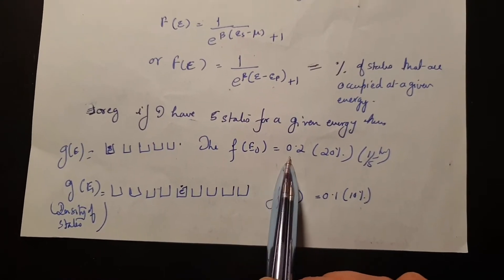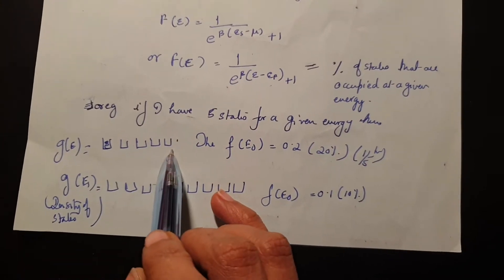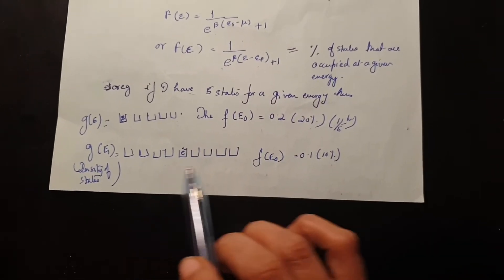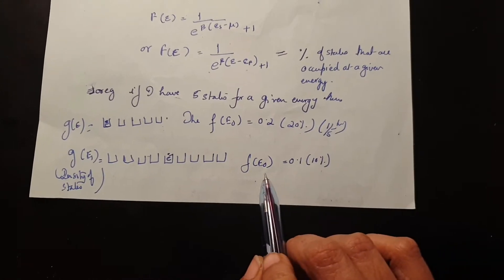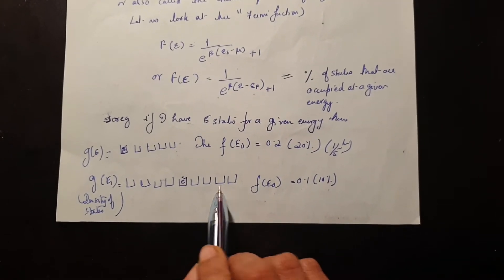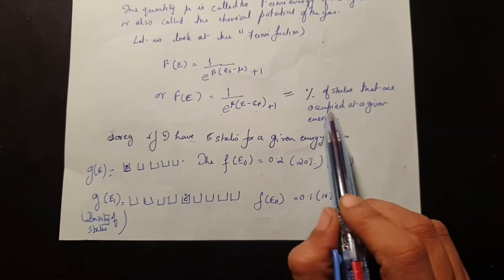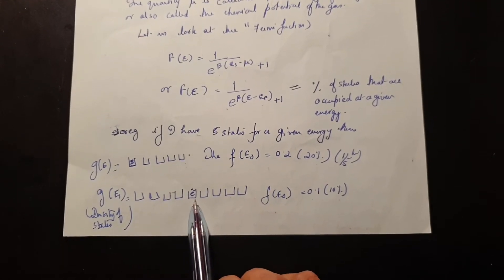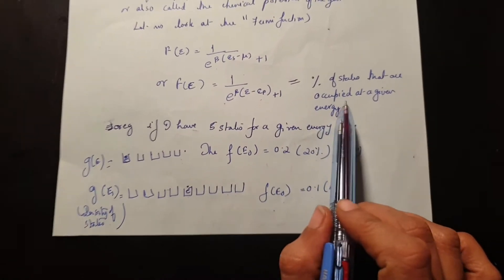If the Fermi function is 0.2 (20%), then one-fifth of the states are occupied, meaning only 1 electron sits in those 5 states. Similarly, if the density of states is 10 at energy E₁ and the Fermi function is 0.1 (10%), then only 1 electron out of all 10 states is occupied. So the Fermi function gives the fraction of states occupied at a given energy.